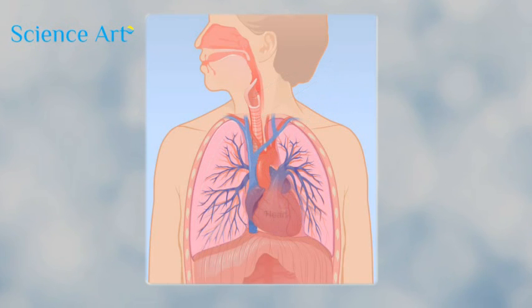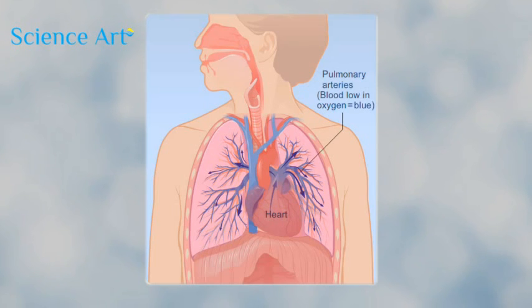At the same time, the heart pumps blood rich in carbon dioxide and low in oxygen to the lungs through the pulmonary arteries.